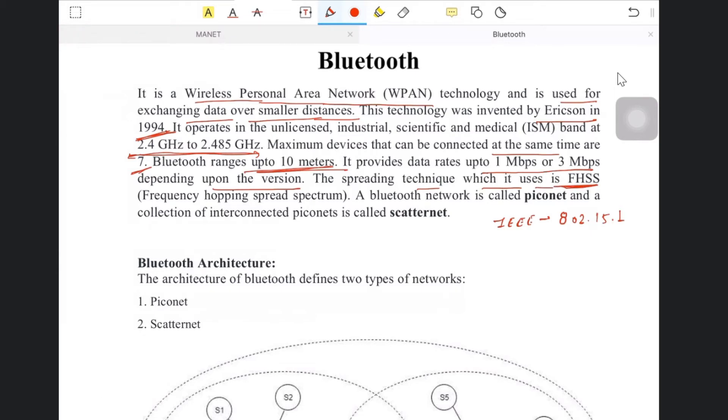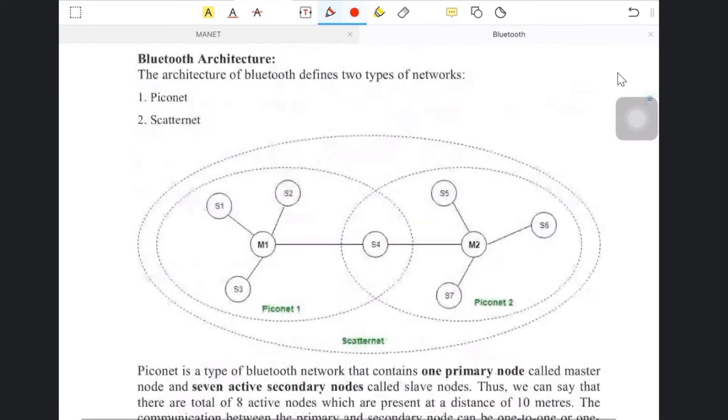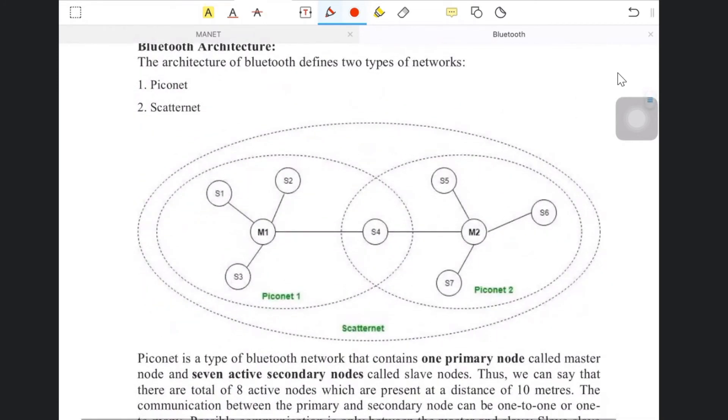A Bluetooth network is also called a Piconet, and a collection of interconnected Piconets is called a Scatternet. You can see in this diagram Piconet and Scatternet. This is one Piconet, this is a second Piconet, and a combination of Piconets is called Scatternet.